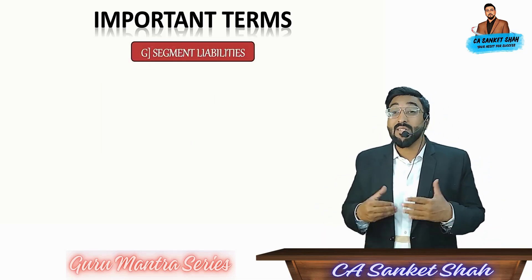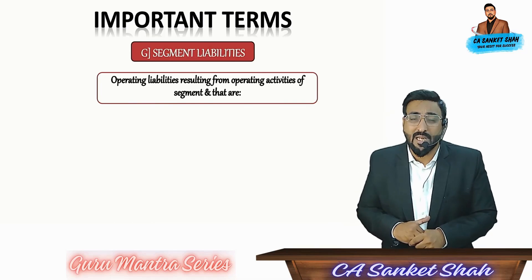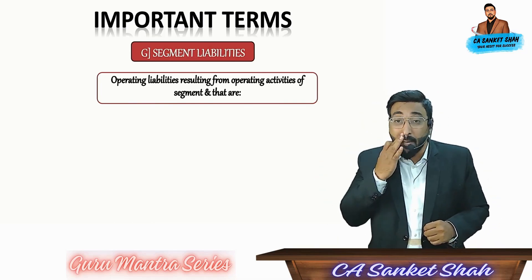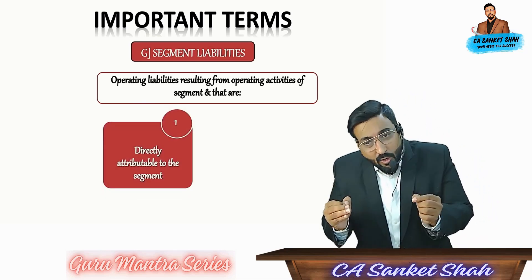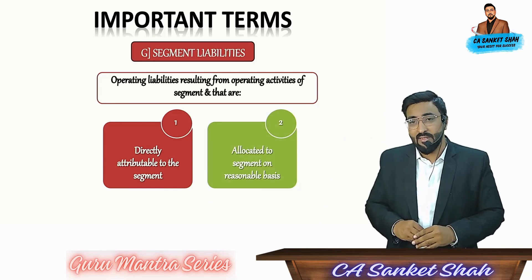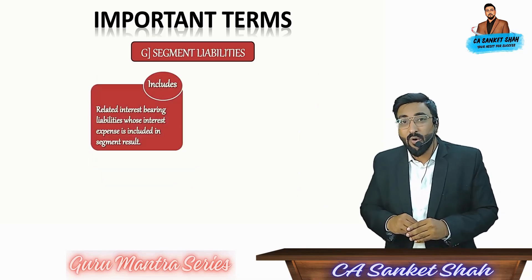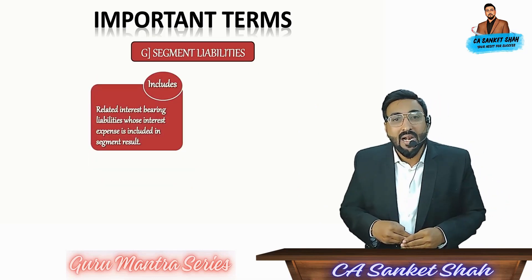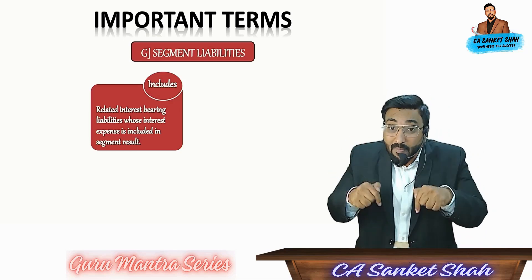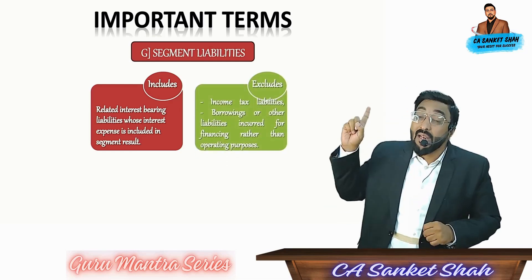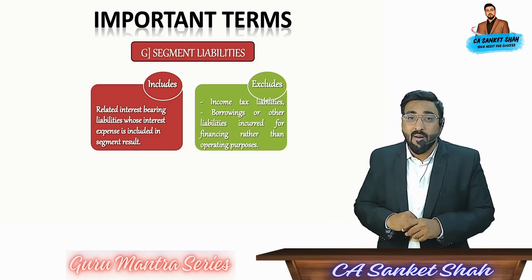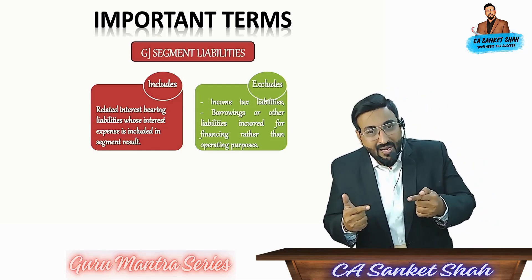What is segment liability? It has a similar definition to segment asset. Operating liabilities resulting from operating activities of a segment that are directly attributable to a segment or allocated to a segment on a reasonable basis. Included: related interest-bearing liabilities whose interest expense is included in segment result. Excluded: income tax liabilities and borrowings or other liabilities incurred for financing rather than operating purposes.